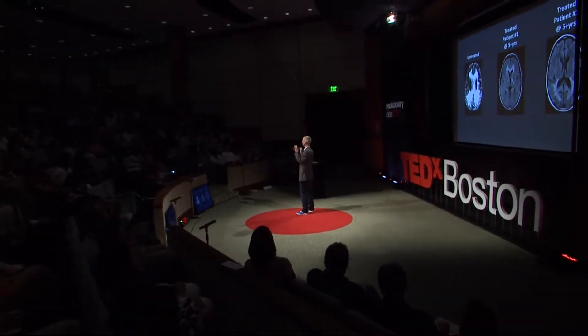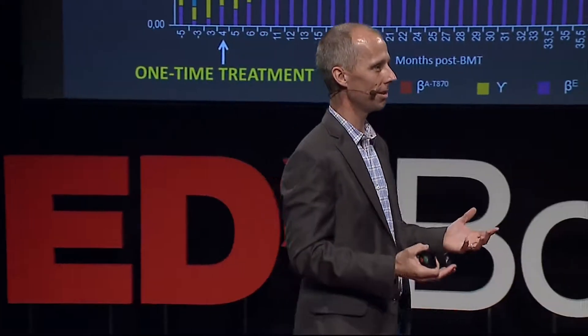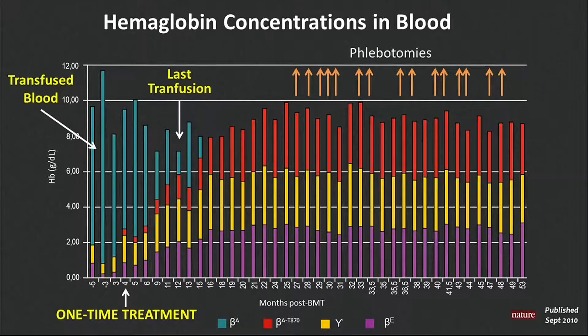Let's zoom out a little bit and say, how does this apply somewhere else? Let me tell you about another disease very quickly — it's called thalassemia. This is a case where you can't make hemoglobin. If you don't get hemoglobin from someone else, you die at an average age of seven. If you do get it from someone else, you can survive to the age of 30 or 40, perhaps, with a very tough quality of life. So what we do there is, instead of inserting the transporter gene, we insert the hemoglobin gene.